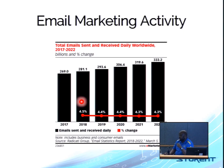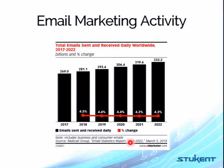Here we have a graph of email marketing activity and current trends from eMarketer.com — these are actual stats. The figures are in billions. There were 28.1 billion emails sent and received per day in 2018. The world population is about 7.6 billion, which equates to about 37 emails sent per day per person.